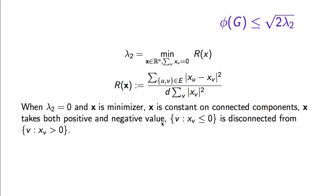Now what we want to do is a sort of approximate version of this argument: if lambda 2 is small, then there must be some vector whose Rayleigh quotient is small — a vector such that for the typical edge, the difference of the vector values at the endpoints is small. Thinking of this as an embedding of the vertices on the real line, endpoints of edges tend to be close to each other, so there should be some way of cutting the graph by taking a cutoff on this embedding such that not too many edges cut across.